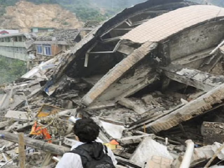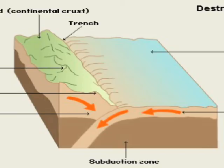Well, beneath the ground there are these huge plates called tectonic plates which make up the Earth's crust. Between each plate there are plate boundaries. There are four different types of plate boundary: destructive, collision, constructive, and conservative.